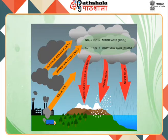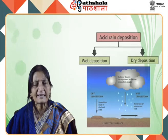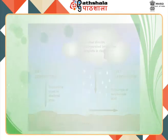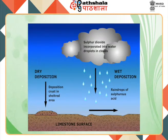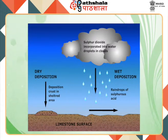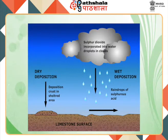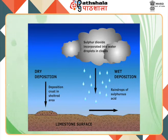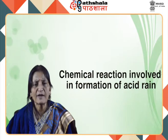Types of acid rain deposition can be categorized into two parts: wet deposition, where acid falls with rain, sleet, hail, snow and fog; and dry deposition, which refers to acidic gases and particles deposited on soil, vegetation and water on the earth's surface. The pH scale is used for measurement of rain acidity. The pH scale runs from 0 to 14, where 0 to 6 is acidic, 8 to 14 is basic, and pH 7 is neutral. Normal rain has a pH of between 5 to 5.5, while typical acid rain has a pH as low as 4.